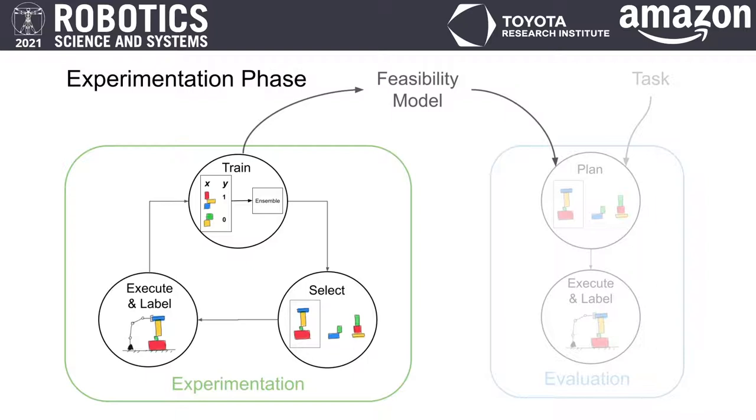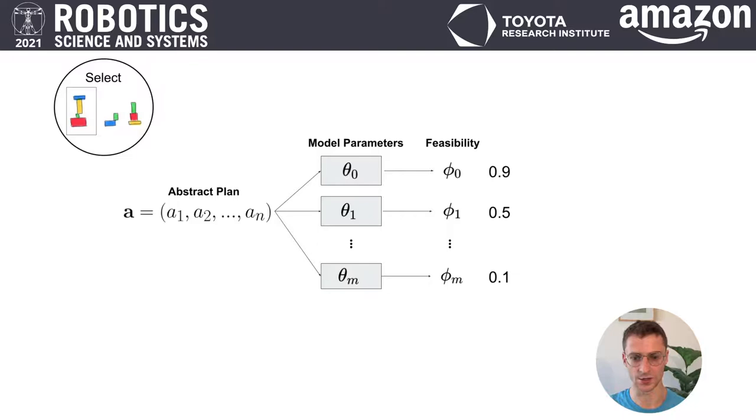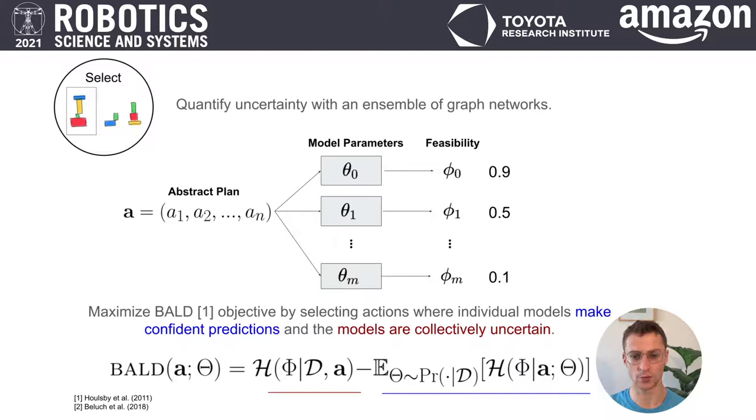During the experimentation phase, we take an information-theoretic active learning approach to minimize entropy over the feasibility model parameters. Specifically, in the selection phase, our objective is to choose plans whose execution would be informative about the feasibility model parameters. This approach requires a representation of model uncertainty, so we use an ensemble of graph neural networks to approximate a distribution over model parameters.